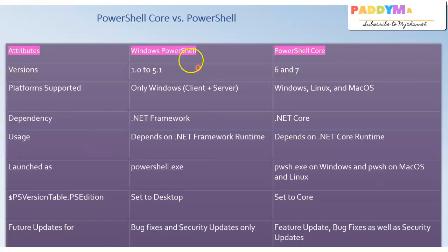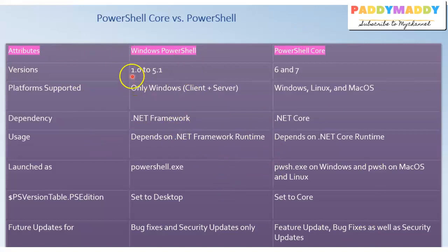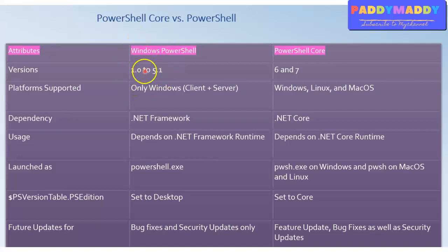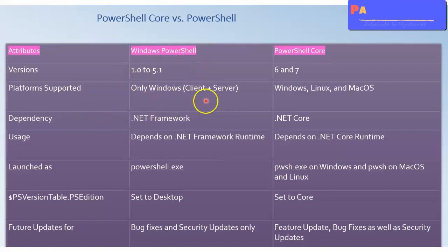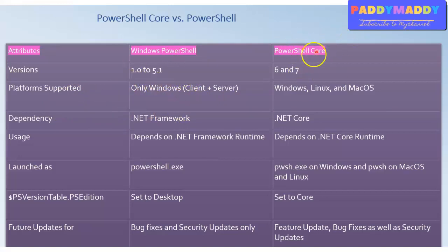The reason is, if you look at the differences here, versions 1.0 to 5.1 all fall under Windows PowerShell. And that's a major drawback — Windows PowerShell only works on Windows, whereas PowerShell Core works on Windows as well as Linux and macOS.